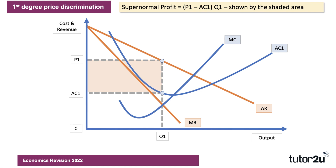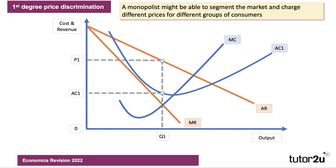If you charge a single price for the product — producing Q1 with everybody paying P1 — that's the maximum total profit this business can achieve. But could they do better? The answer is yes, because if you look at the demand curve, some consumers are willing and able to pay more than price P1. Indeed, they might be willing to pay price P2, which is higher than that.